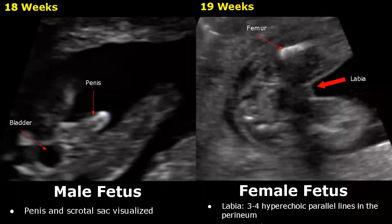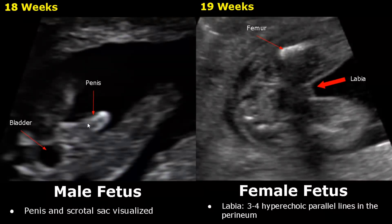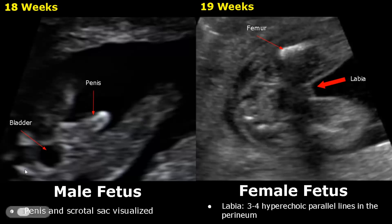Here we have an image of 18 weeks. We can see the penis and the scrotal sac as well. This small dome-shaped structure is the scrotal sac. We can also see the bladder here.